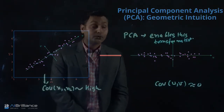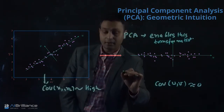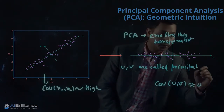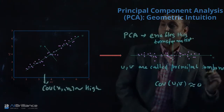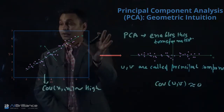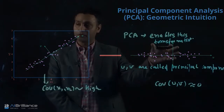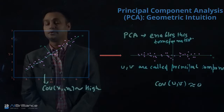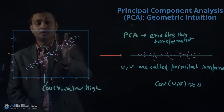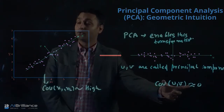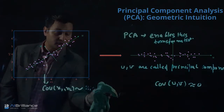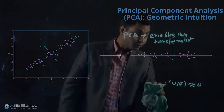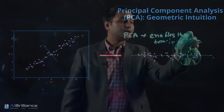U and v are called principal components. PCA essentially allows us to take the data and transform it into a space where the correlation between the different axes is as minimal as possible. This is the geometric intuition behind what PCA does — it takes a dataset in the original space and transforms it into another space where the correlation between the variables is minimized. That is the primary motive of applying Principal Component Analysis.